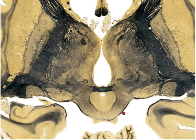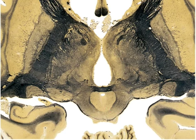We have the superior colliculus right here, part of the tectum. The superior colliculus is used for visual reflexes, coordinating head and eye movement, and also visual tracking of moving objects.